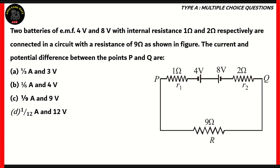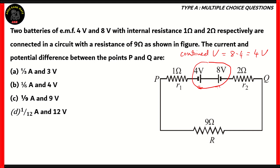Remember, we have two batteries, so their combined voltage is equal to one minus the other, because they are in opposite directions. Because their positive terminals are connected, their potential differences are in opposite directions, so we subtract them. So 8 minus 4 gives you 4 volts. When combined, the battery gives us a combined voltage of 4 volts.